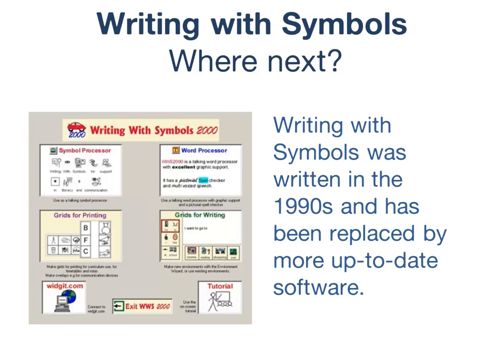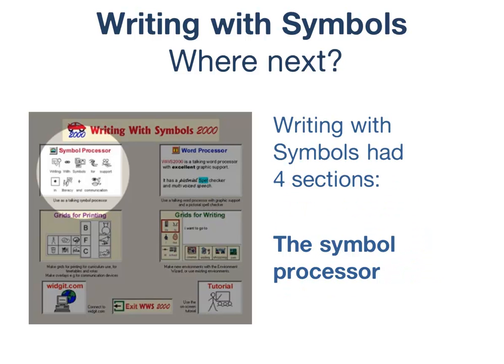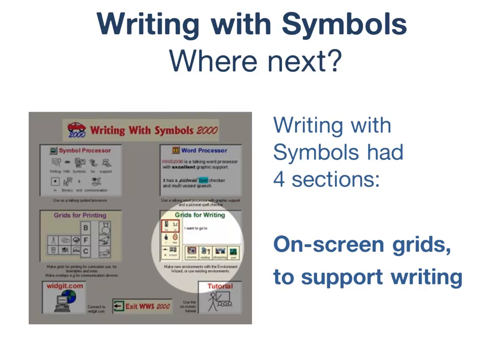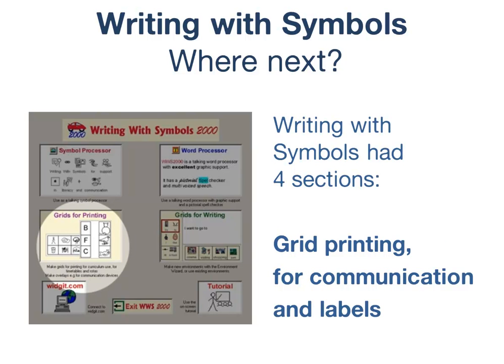Writing with Symbols was created back in the 1990s as the first proper symbol processor. Within Writing with Symbols you could write symbol documents, starting either from symbols or from text. There were interactive on-screen grids to help emergent writers, and you could print grids for labels or for communication.